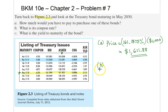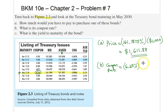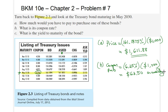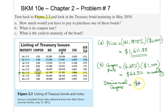Now for part B, we are looking for the coupon rate. In this case, we realize that the coupon rate is 6.25%. This implies the coupon payments would be equal to 6.25% of the face value, which is $1,000, giving us $62.50 in annual coupon payments. Since this Treasury bond pays semi-annual coupons, the semi-annual coupon would simply be half of this value, which equals $31.25.